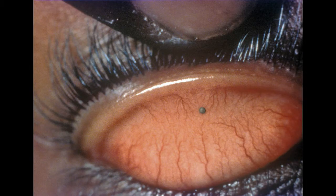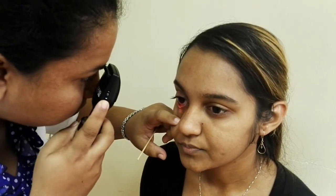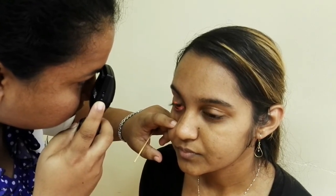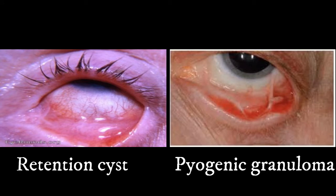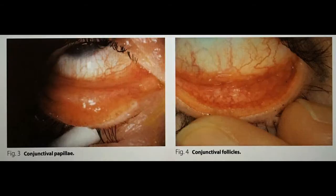Foreign bodies such as a speck of dirt or metal can be visualized and accessed in this area. The lower lid is retracted by gently pulling down the skin with the thumb or forefinger, exposing the inner palpebral conjunctiva. The patient is instructed to look up while the lower lid is held, and the plus 10 setting on the direct ophthalmoscope is used. Inspect for redness, swelling, roughness, and concretions, some of which can be seen in conditions such as pyogenic granulomas and retention cysts. The lower fornix may also demonstrate elevations in the form of follicles or papillae, which can be a feature of viral or chlamydial conjunctivitis.